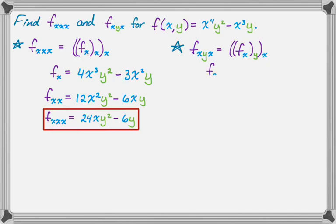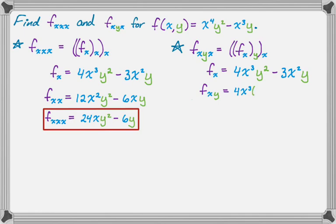We already found partial x, so I'll just copy that down. So x is a variable and y is a constant there. Now we're going to take the derivative of this new function with respect to y — so x is a constant and y is our variable. We get 4x cubed times the derivative of y squared which is 2y, minus 3x squared times the derivative of y which is 1. Cleaning that up: 8x cubed y minus 3x squared.